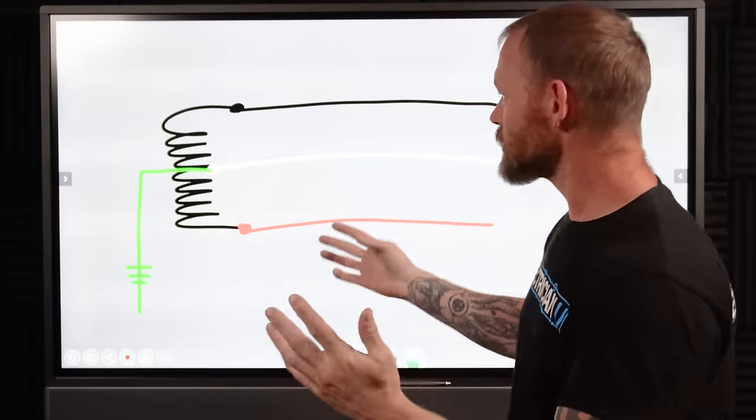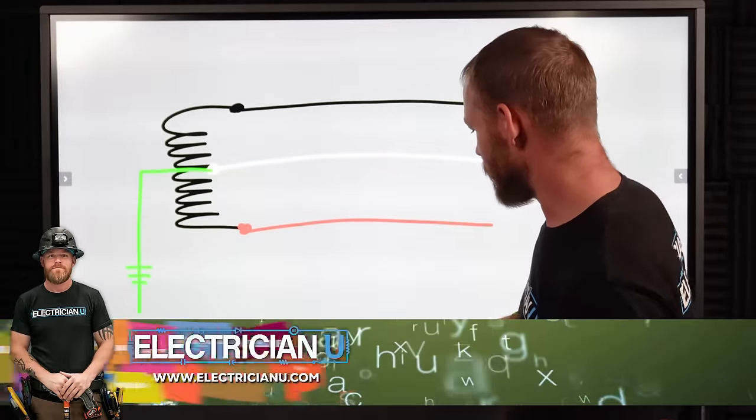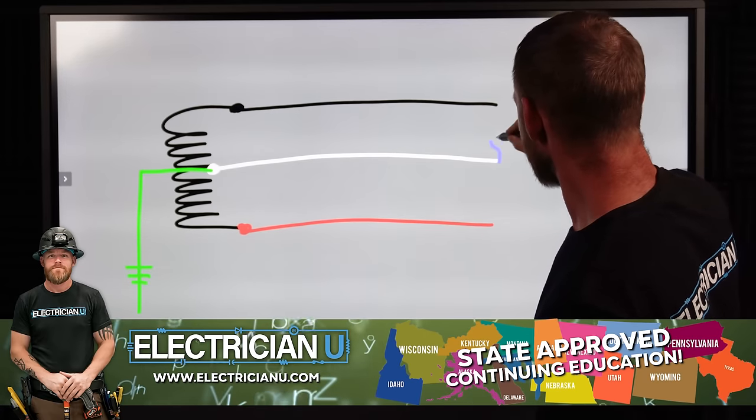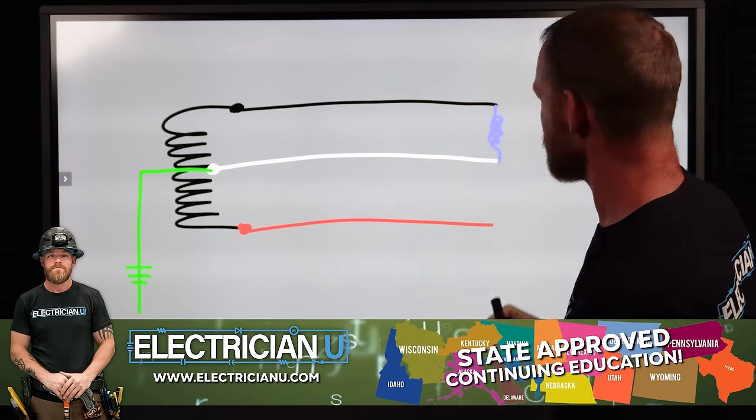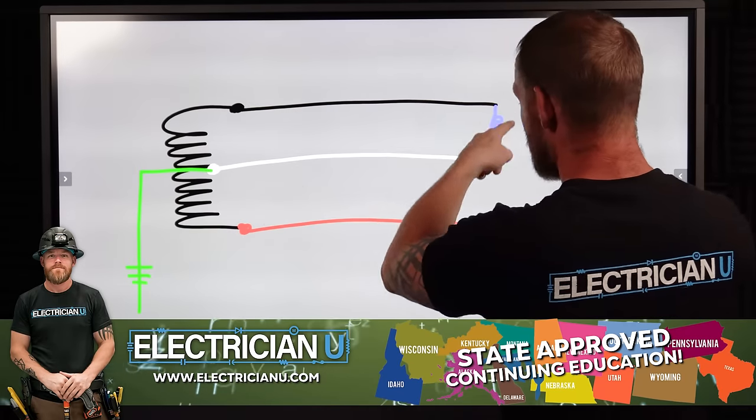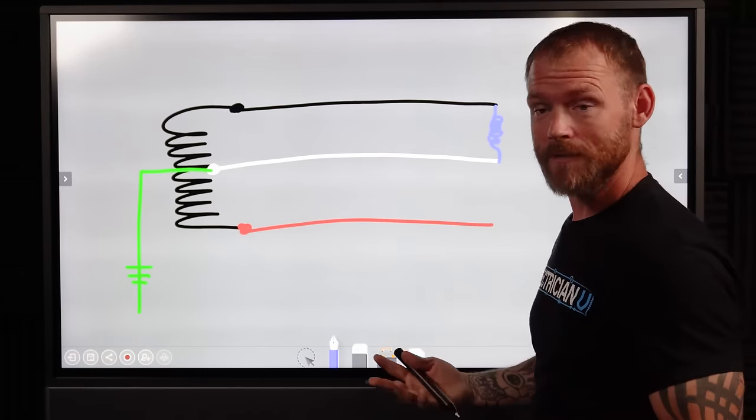Current doesn't travel that way. Current's always looking for a loop. Say we've got a load, like a light bulb right here. This is going to symbolize a light bulb, the little filament that's inside of the light bulb. Because now we have a complete loop, current can travel.